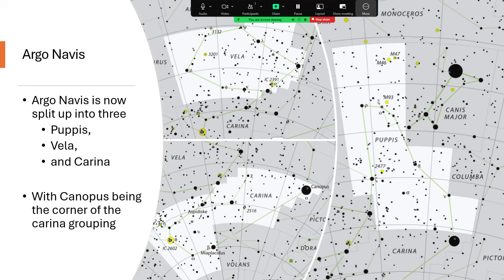You can see the three of them, and indeed, you can figure out how they all fit together and were fitted together in Argo Navis in the first place.